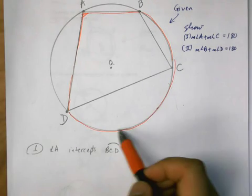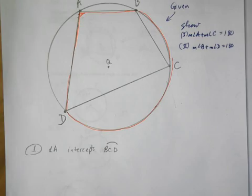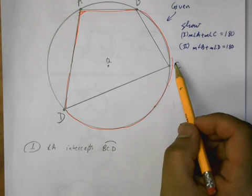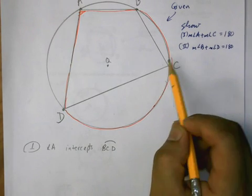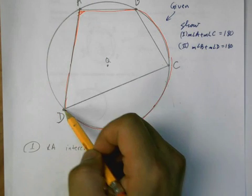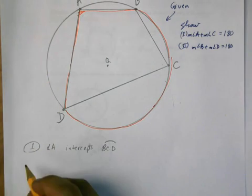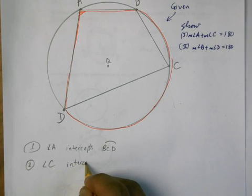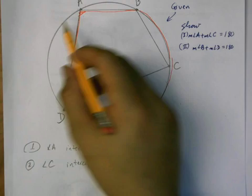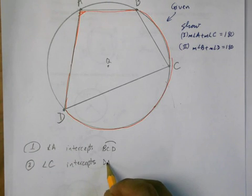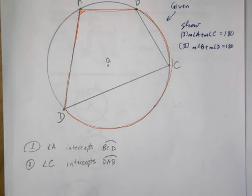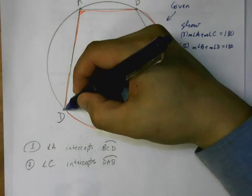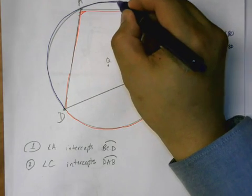Then we can also say, on the flip side of things, angle C intercepts arc BAD or DAB. Angle C intercepts arc DAB. Angle C intercepts arc DAB. So C is this angle, it intercepts this arc here.